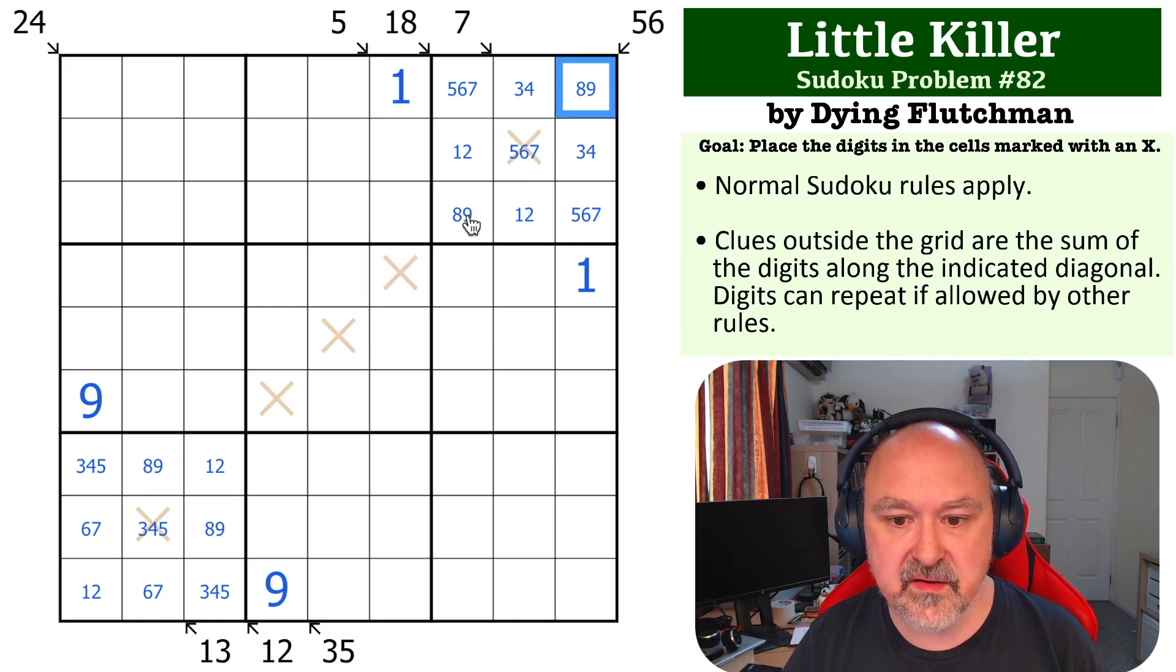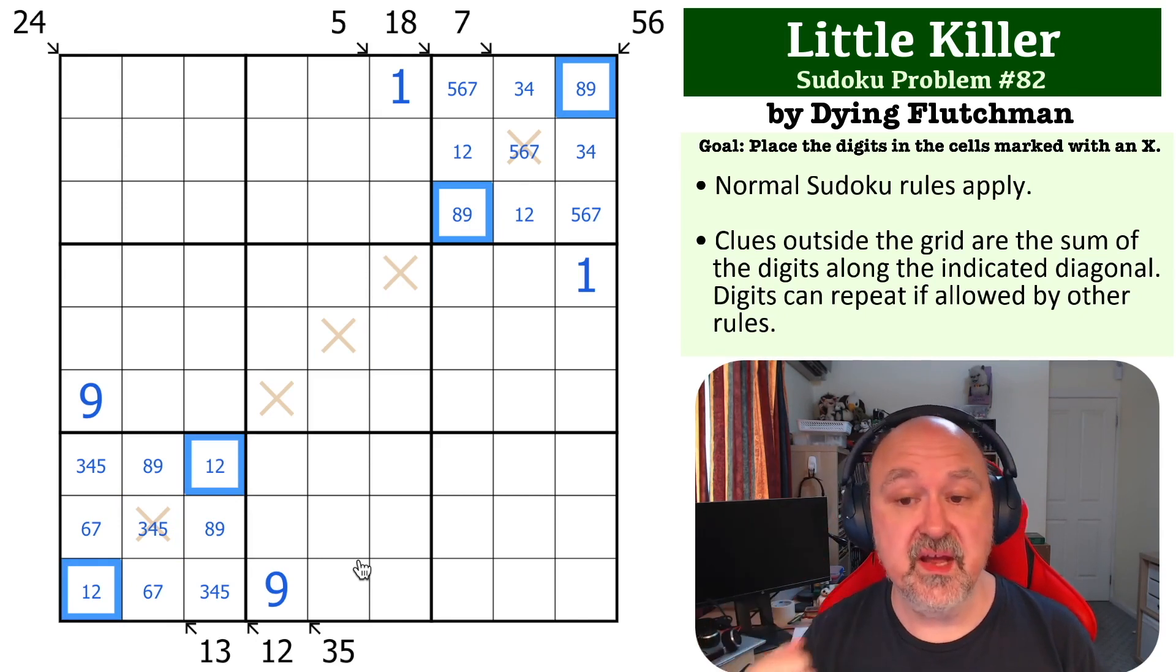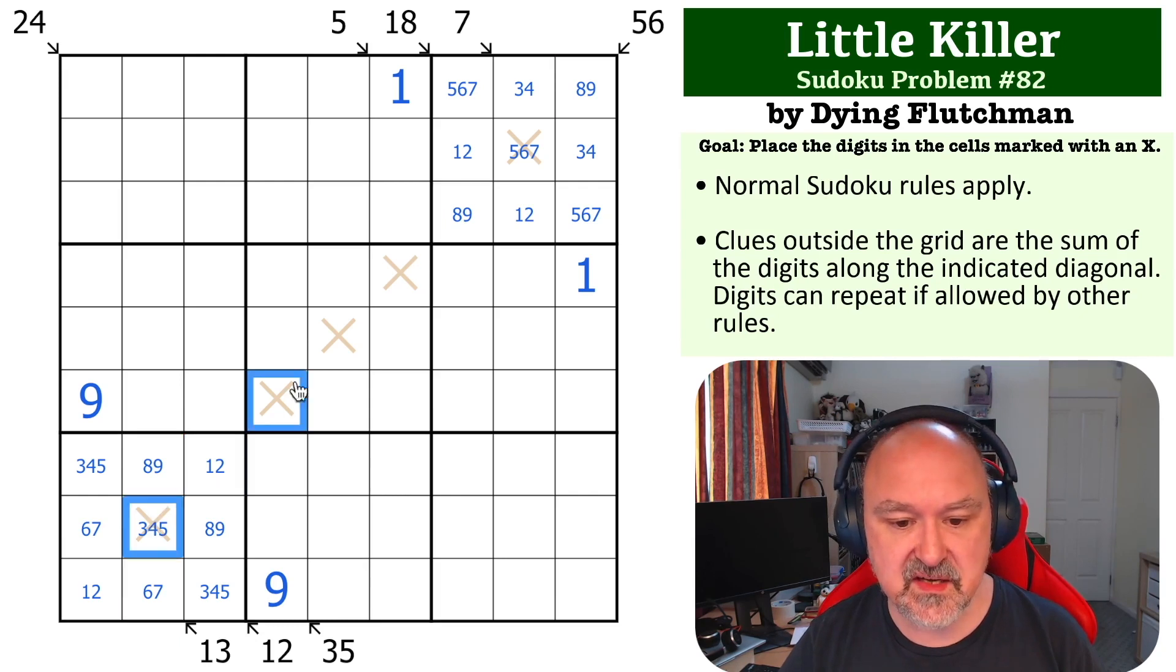Now we can look at this 56 diagonal. If we look at the fact that this 8, 9 sums to 17, this 1, 2 sums to 3. If you add 17 and 3, you get 20.